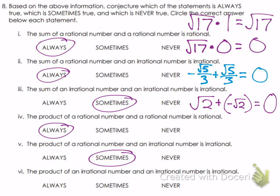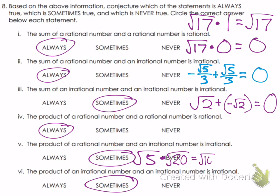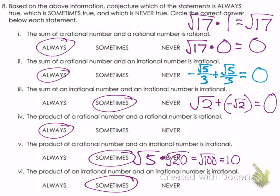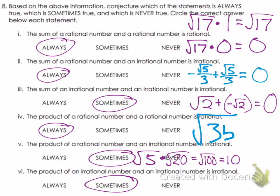The product of an irrational times an irrational is also sometimes — not always — irrational. For example, √5 times √20: 5 times 20 = 100, and √100 = 10, which is rational. But √35, since 35 is not a perfect square, gives an irrational result. So irrational times irrational can yield either outcome.